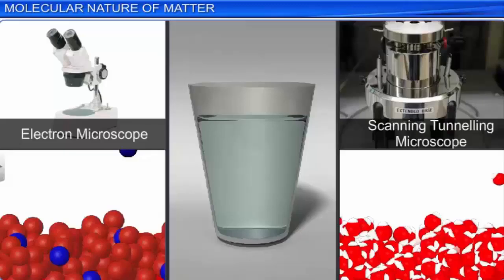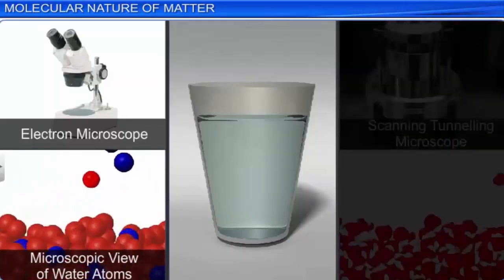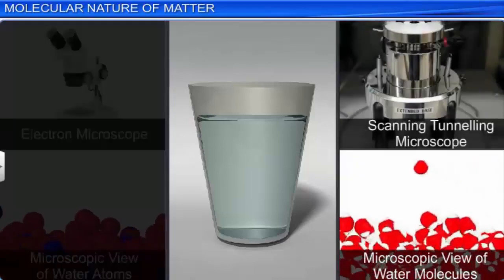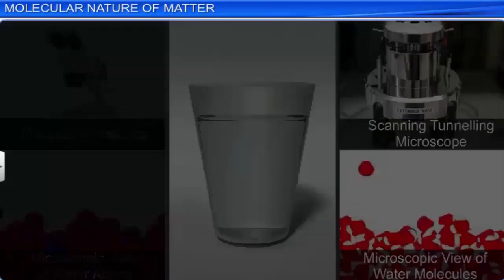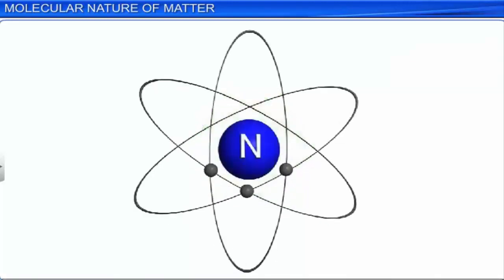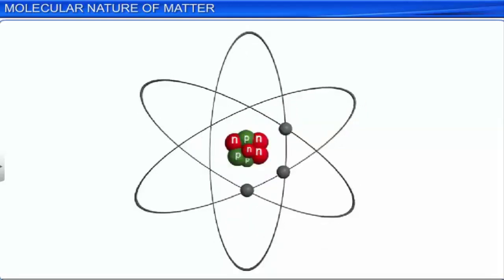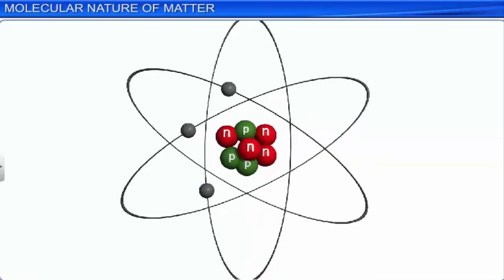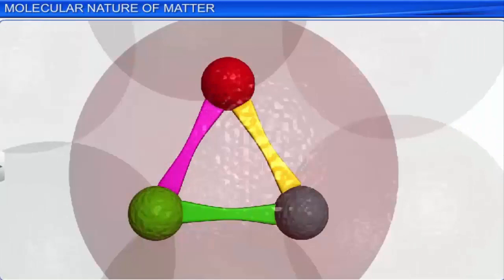The molecules and atoms of matter can be seen through electron microscopes and scanning tunneling microscopes. We now know that atoms are divisible and are not elementary. An atom is made up of a nucleus in the center and electrons revolving in orbits around the nucleus. Protons and neutrons together make up the nucleus of an atom. These protons and neutrons are further made up of quarks. It is believed that quarks may be further made up of string-like elementary entities.